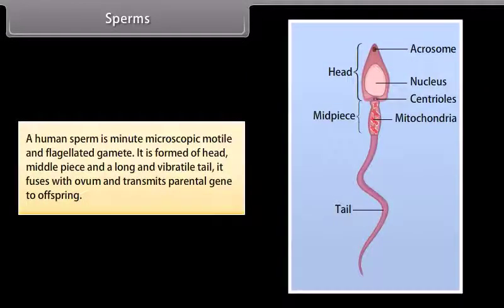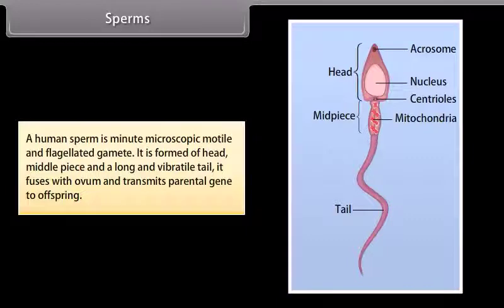A human sperm is a minute, microscopic, motile and flagellated gamete. It is formed of a head, middle piece, and long vibratile tail. It fuses with the ovum and transmits parental genes to offspring.